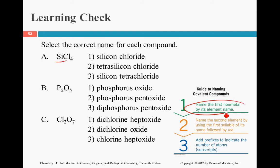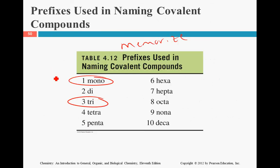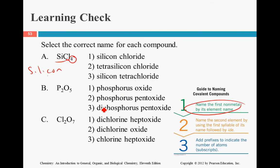Si: first, name the first non-metal, which is silicon — you find that on the periodic table, so you want to get really familiar with it. The second one is chlorine, and we have four of them. Four is 'tetra', so it becomes tetrachloride, because the second one ends in '-ide'. So the answer is silicon tetrachloride.